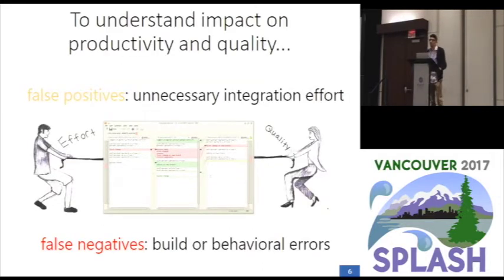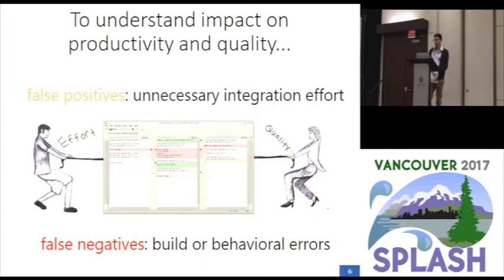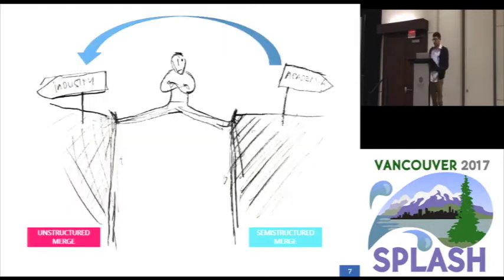This evidence, however, is not enough to justify industrial adoption of Semi-Structured Merge. The problem is that previous studies do not investigate whether the observed reduction in the number of conflicts actually leads to integration effort reduction, without negative impact on integration correctness. In particular, these merge strategies have false positives and false negatives. False positives represent unnecessary integration effort, because developers have to spend time resolving conflicts that are not actually problems, and false negatives represent build or behavioral errors negatively impacting software quality and integration correctness. Even an odd disadvantage of a new tool can become a huge barrier for its adoption in practice.